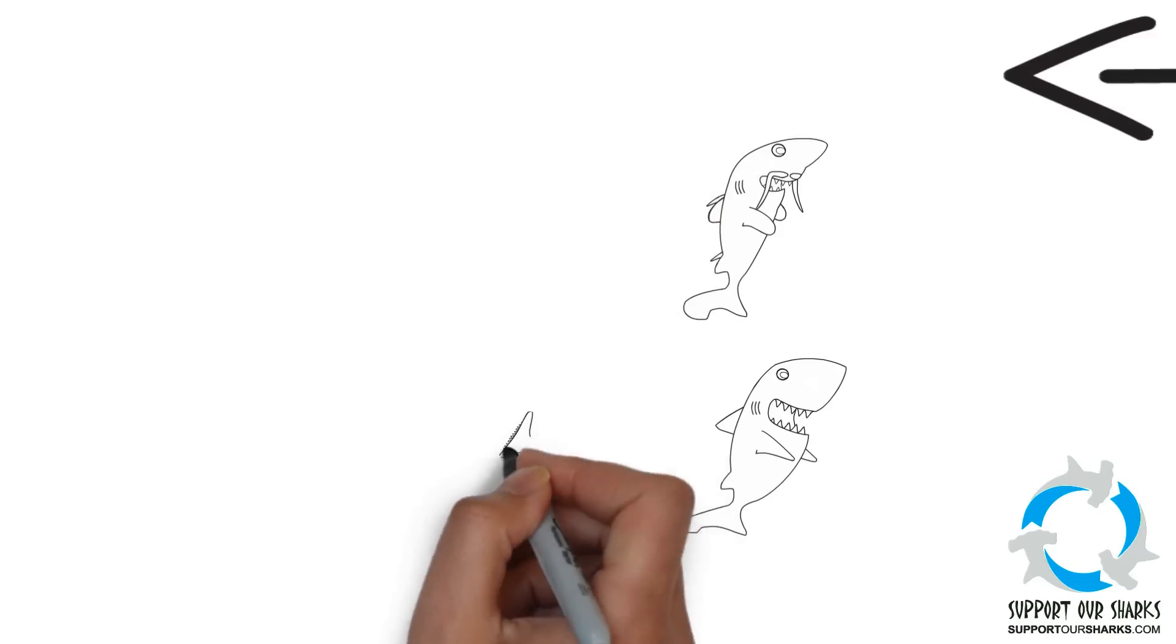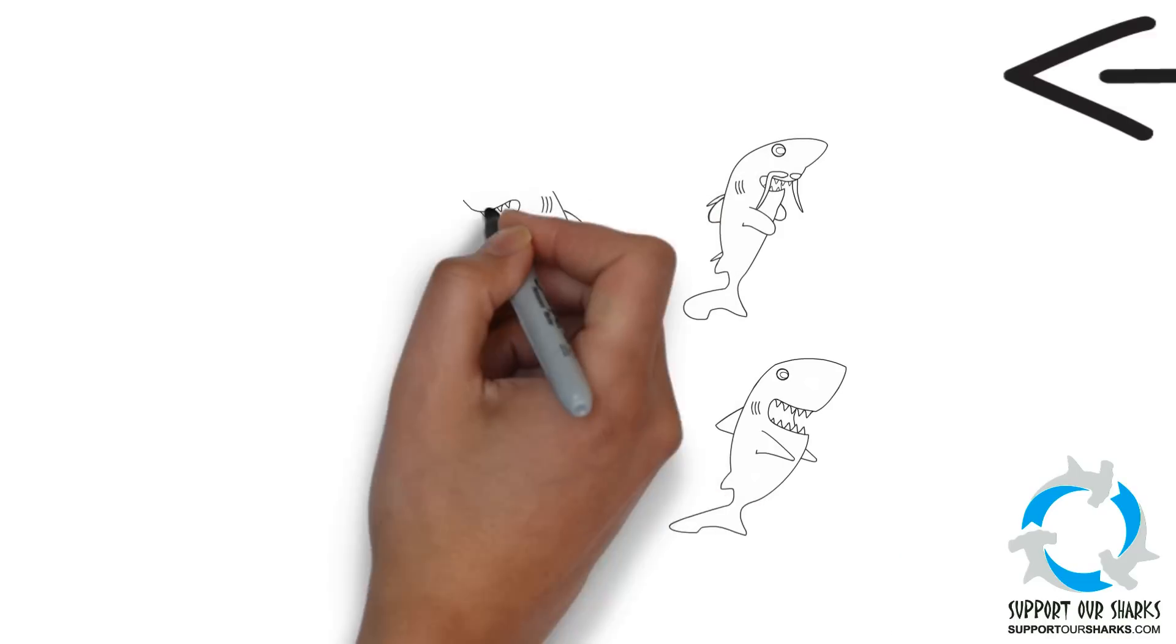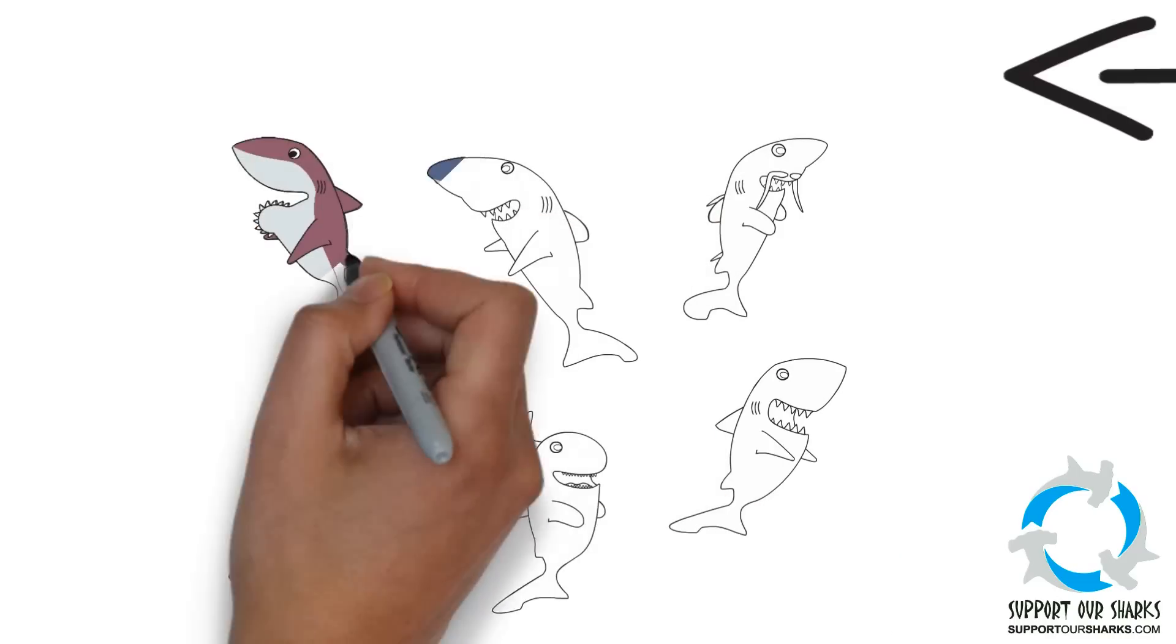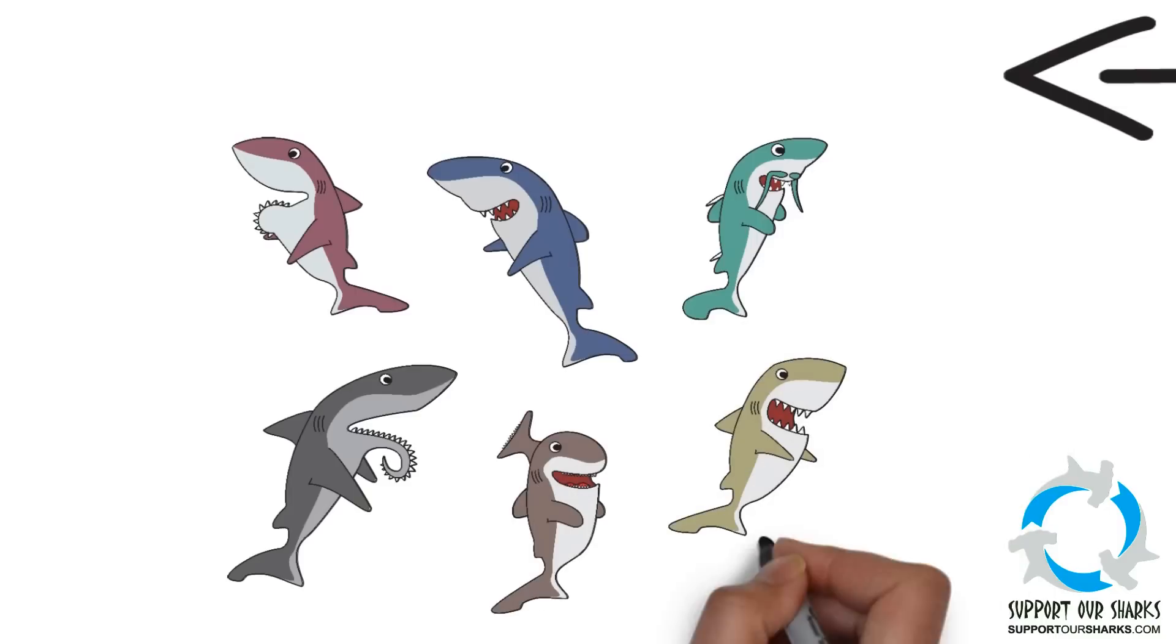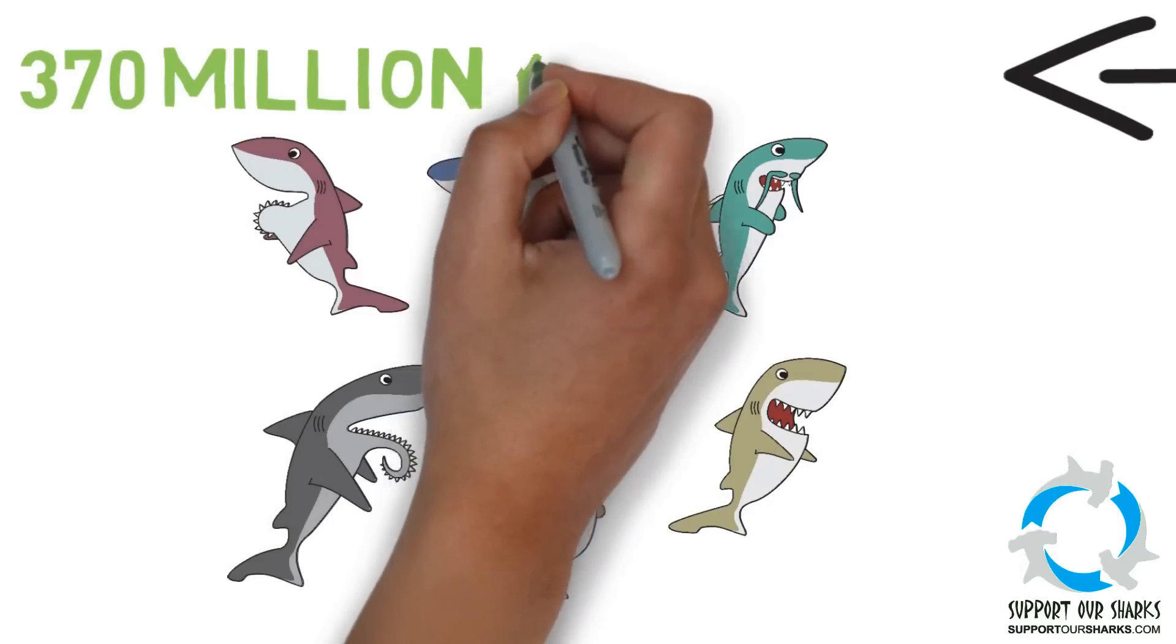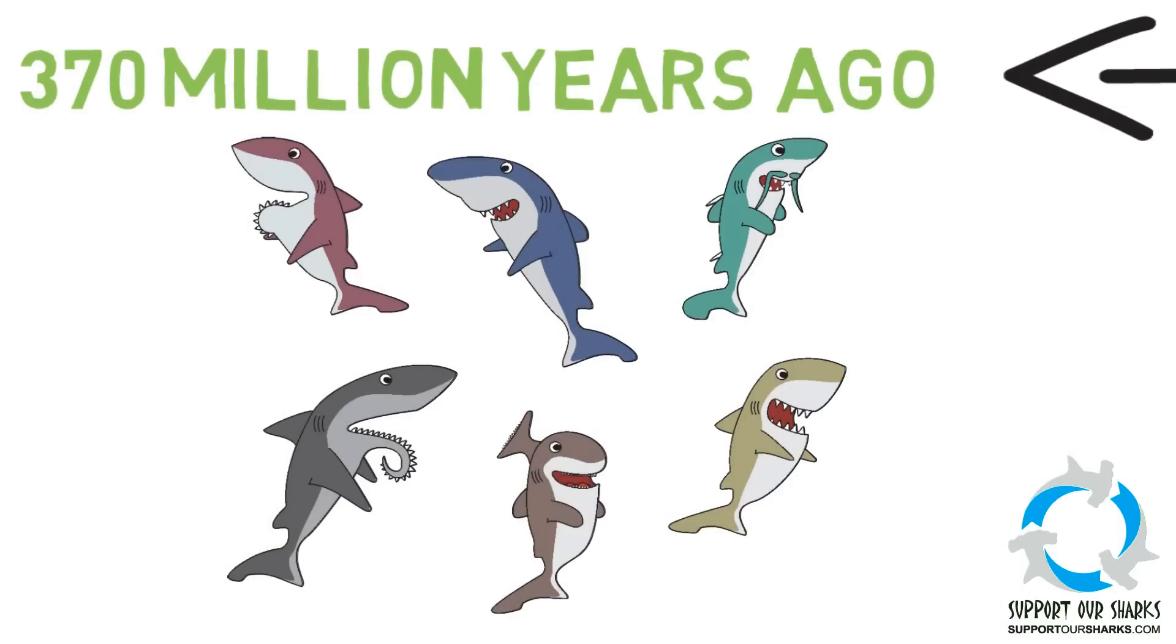During this time, sharks have evolved into many forms that would seem quite alien to us today. But even as long as 370 million years ago, some sharks would have been recognizable to us as sharks.